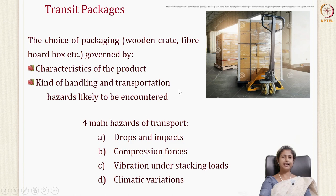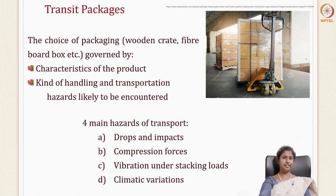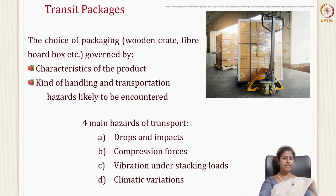So when you say a transit package, the choice of the package — whether it's a wooden crate or fiberboard box — is decided by the characteristic of the product and the kind of handling and transportation hazards it might encounter during transit. The four main hazards of transport are: drops and impacts, compression forces, vibration under stacking loads, and climatic variations.